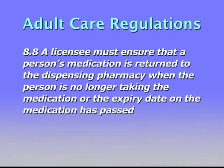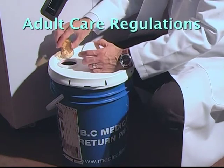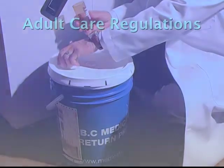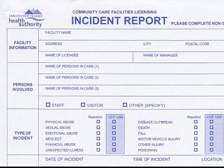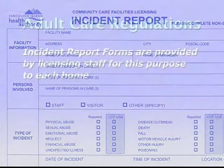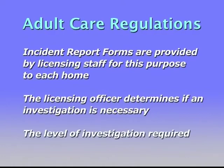Section 8.8 states a licensee must ensure that a person's medication is returned to the dispensing pharmacy when the person is no longer taking the medication or the expiry date on the medication has passed. Medication errors that must be reported to licensing are errors in the administration of a medication that adversely affect a person in care or require emergency intervention or transfer to a hospital. Incident report forms are provided by licensing staff for this purpose to each home. Based on the information in the incident report, the licensing officer determines if an investigation is necessary and the level of investigation required. These regulations demonstrate one area where licensing provides an important safeguard for people living in group homes.